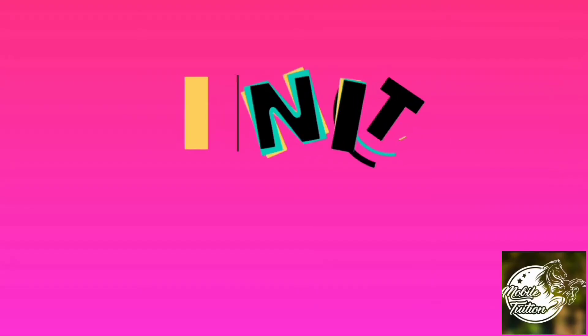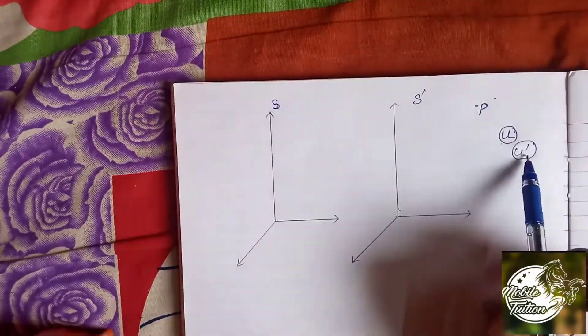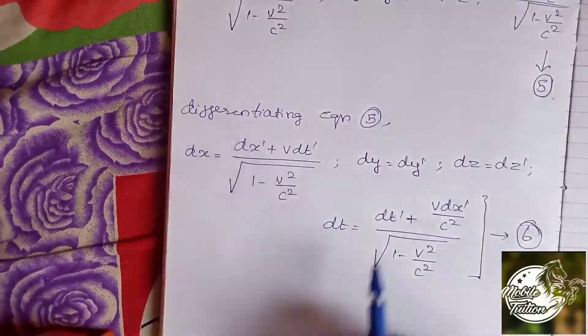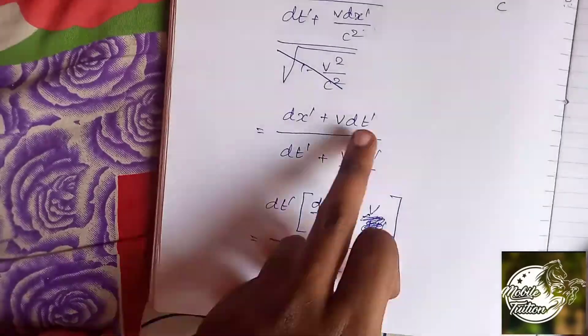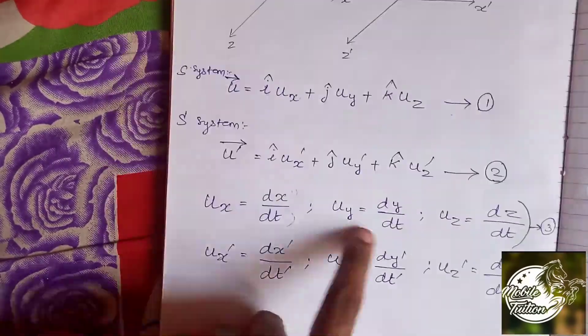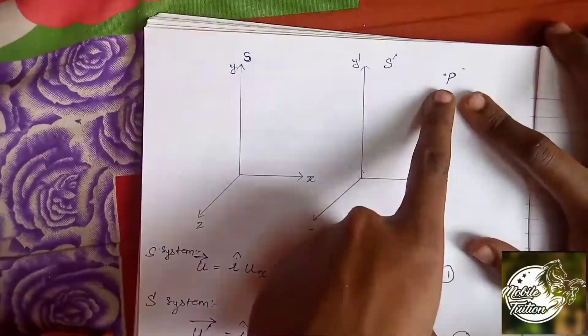When we say that particle, we go to a different direction. If we say that particle, we go to a different direction. Therefore, we go to a unit vector to follow the unit vector. First, we have an equation and we have a frame. Then we differentiate. When we say that, we have the data. Finally, if we have an inertial frame, the answer is easy. So let's take a look at that.